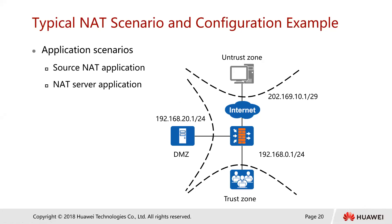For application scenarios, you can apply source NAT if you have one public IP address and want all end users to access the internet — use source NAT with address pool with port translation. If you have a few public IPs and a small number of users, you can do it without port translation, depending on what you want to achieve. For a NAT server, if you have a data center or server and want end users to access it, assign it one public IP address mapped to its private IP.